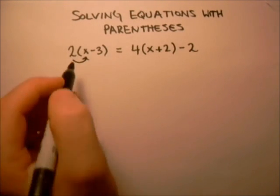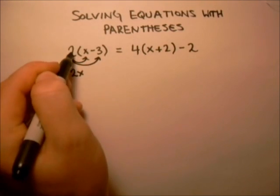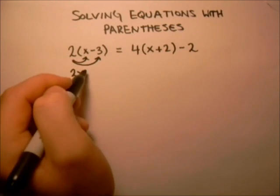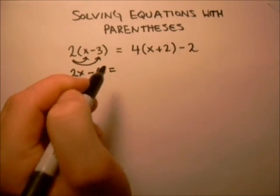And so what we do is we multiply 2 times x, and then we multiply 2 times negative 3, so we get minus 6, and then that equals...